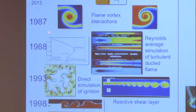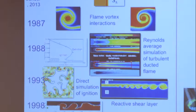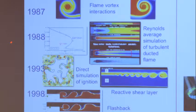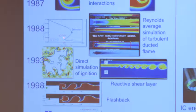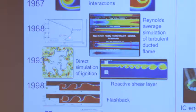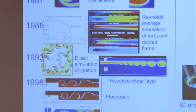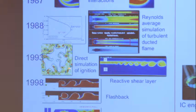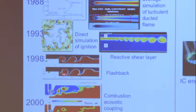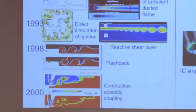A lot of work has been done on counterflow flames. For example, this morning I was explaining what happens to the extinction curve as you change the temperature of one of the reactants — you have this S-shaped curve, and as you change the temperature, at a certain point you don't have ignition anymore. Reynolds-average simulations of turbulent ducted flames were made around these times. We started doing large eddy simulations around this year, though there were a few earlier — for example, Suresh Menon had done nice work on ramjet instabilities using the G equation.